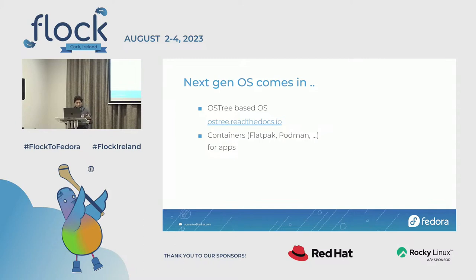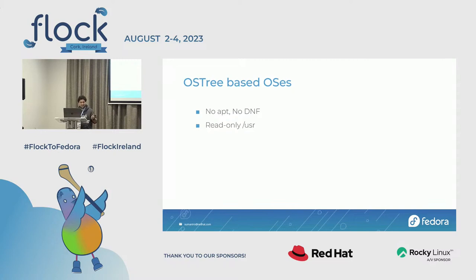OSTree started to address that, and OSTree used to maintain a lot of Flatpaks and Podman apps, so all apps were very sandboxed. Technically, since OSTree is immutable, all client applications came as Flatpaks and all server applications came as Podman apps. That made life easier for most people who use OSTree. The only problem is there's no DNF, and since it's immutable, you cannot really modify /usr — at least not the way OSTree is meant to be used.